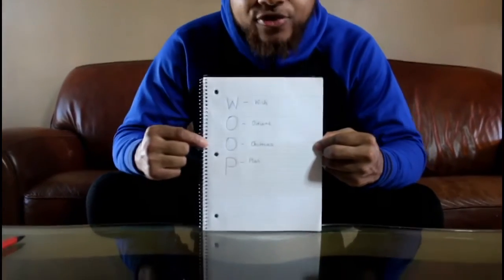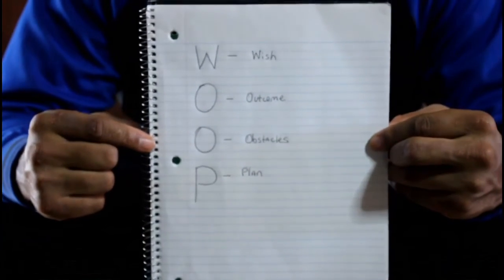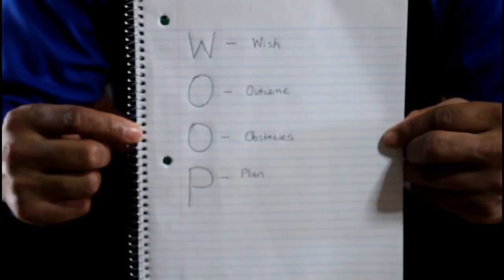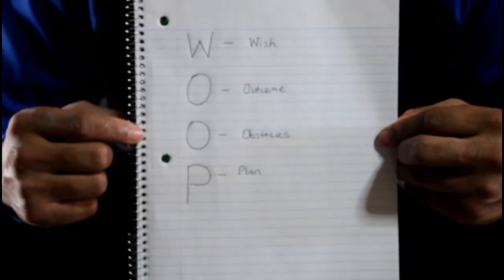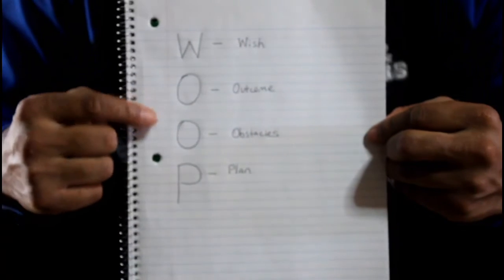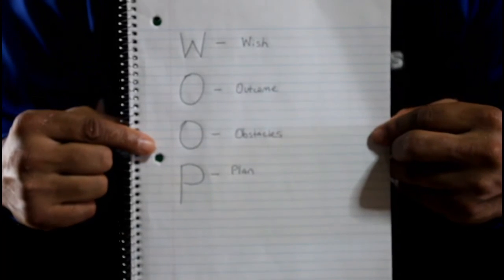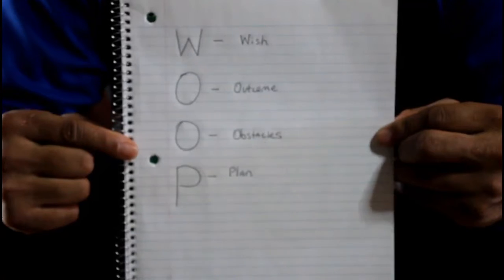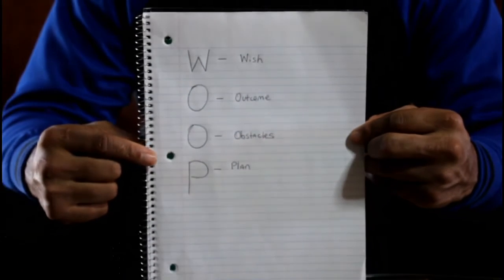Next, think about the outcome. After you set your goal, what will be the outcome of you accomplishing it? What will happen if you actually do accomplish this goal? Take a minute, think about it, and write it down. The second O is for obstacles — think about the challenges and obstacles you may face while trying to accomplish this goal, and write those down.